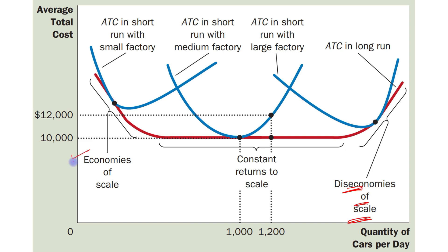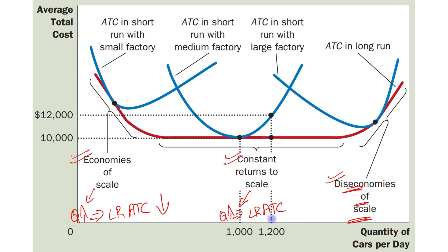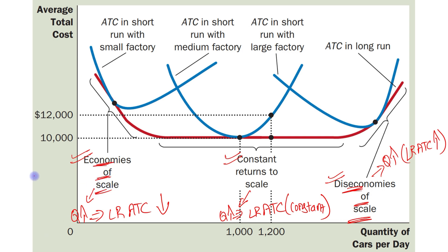So these three concepts are: economies of scale — when output level increases, long run ATC declines; constant returns to scale — when output level increases, long run ATC remains constant; and diseconomies of scale — when output level increases, long run ATC also increases. The reason for economies of scale is increased specialization among workers, and the reason for diseconomies of scale is coordination problems.